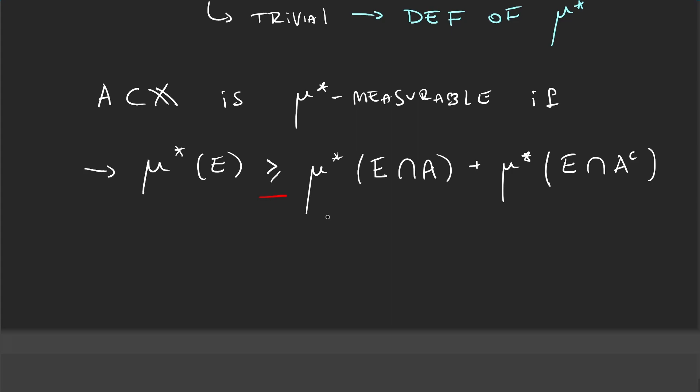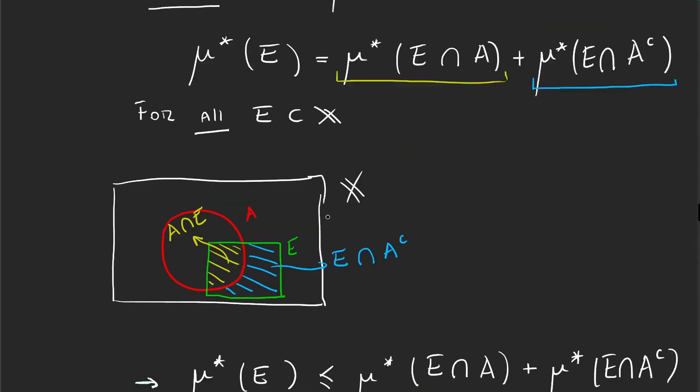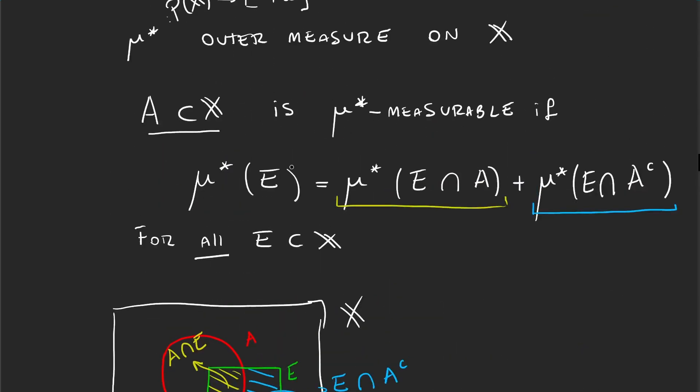And now the motivation behind defining μ* measurability has to do with the fact that whenever we have a set that's well behaved, this equation, the one with the equality, this equation is telling us that the outer measure of the set A is equal to the inner measure.